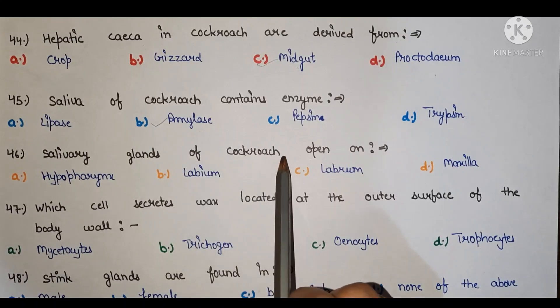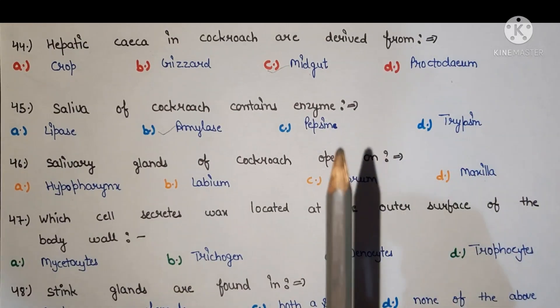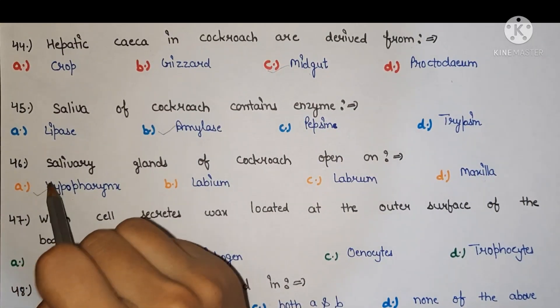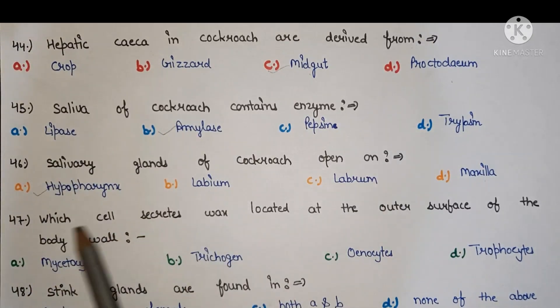Next, salivary glands of cockroach open on the right answer is hypopharynx.